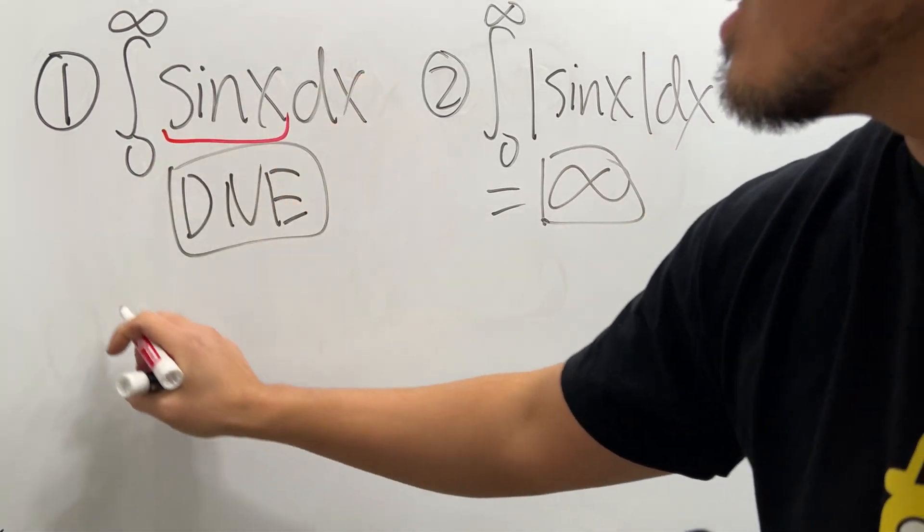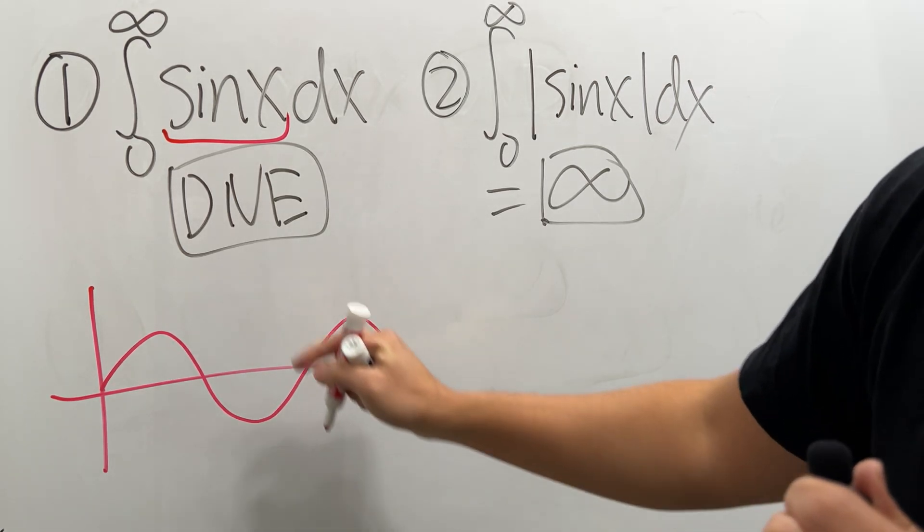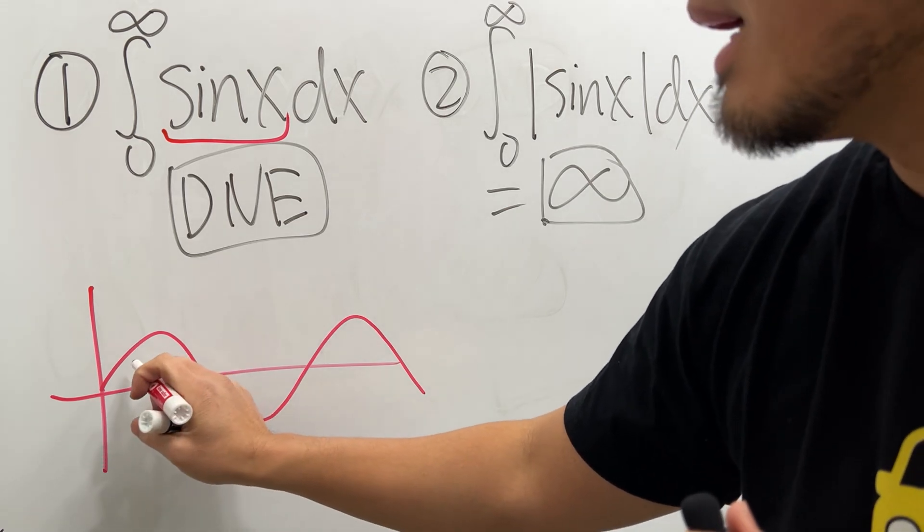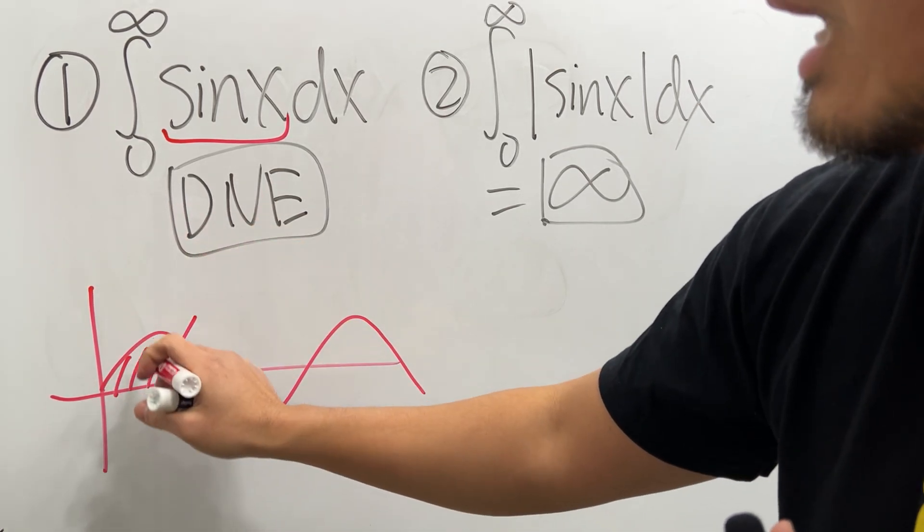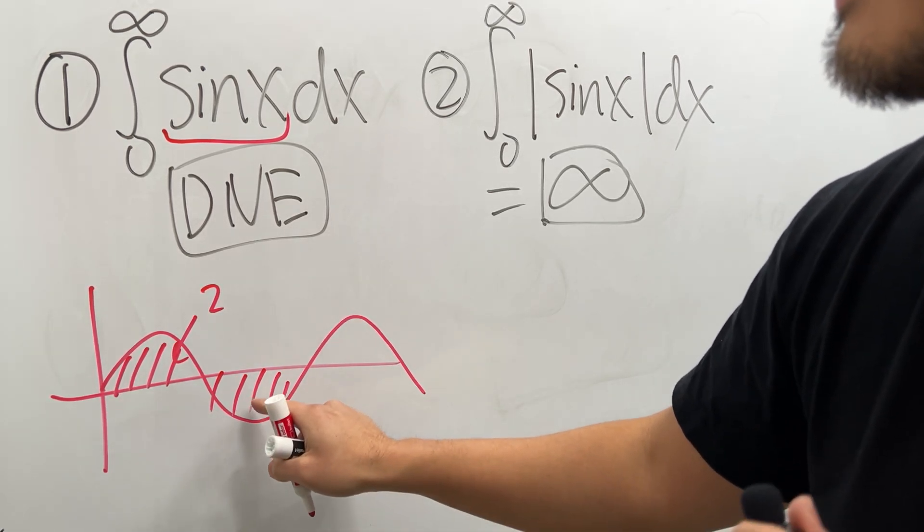Why? Check this out. If you graph sine x, well the sine function looks like this. And remember for integrals we are looking at the area, right? But this part is above the x-axis and in fact this area is equal to two. But this part is below the x-axis. They are the same size but the integral here is considered to be negative two.